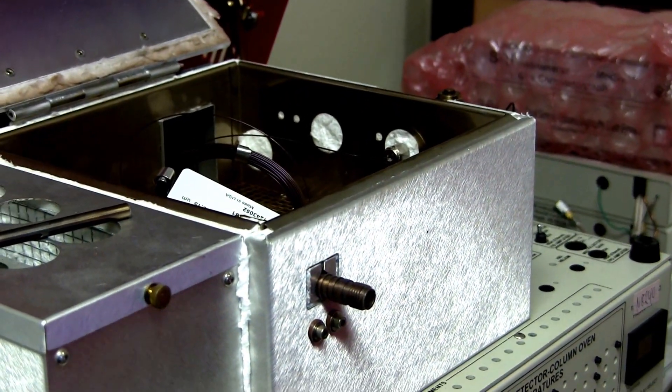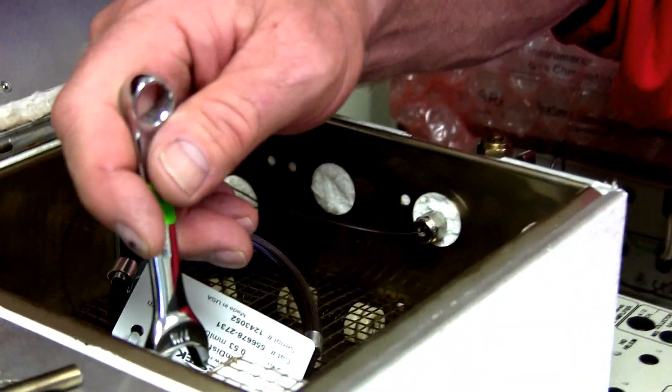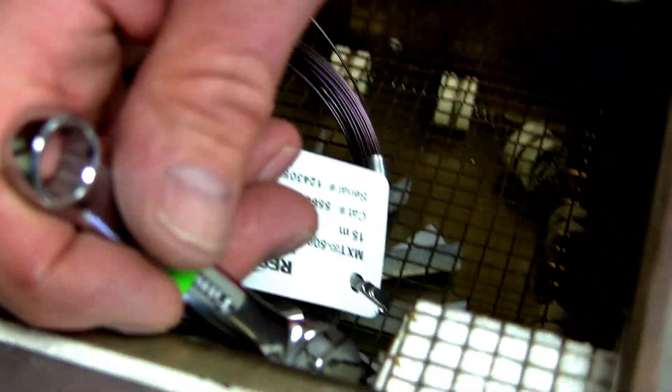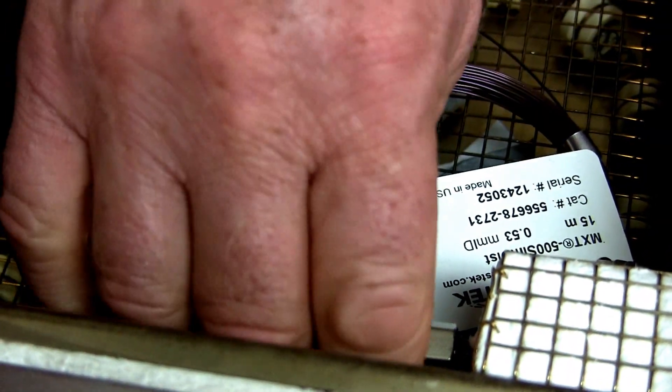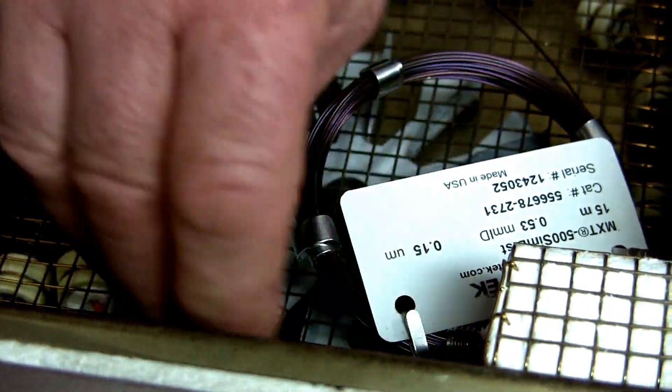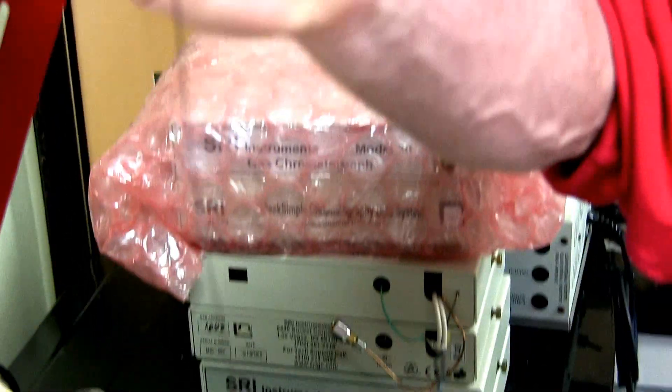The column now is connected to the inside of the injector. So I'm taking my 7/16 wrench and I'll loosen the nut and ferrule that hold the column, and then remove the column from the injector.